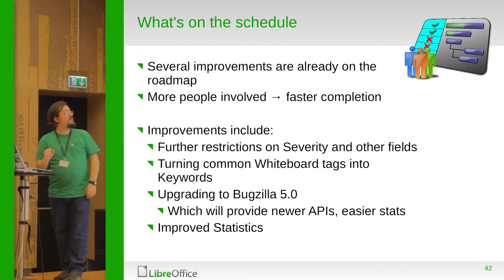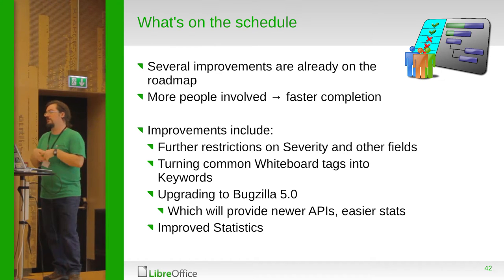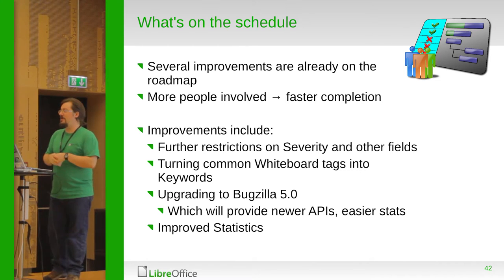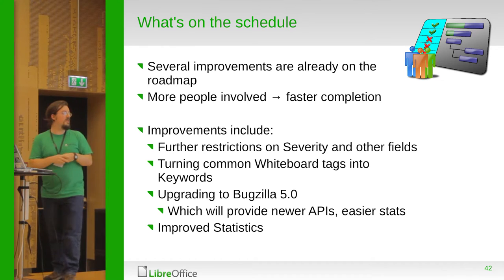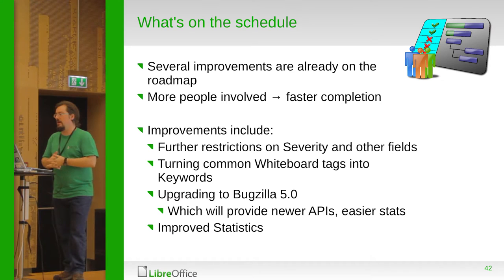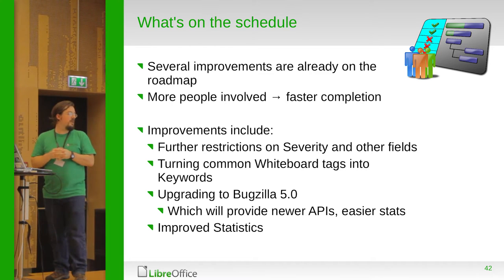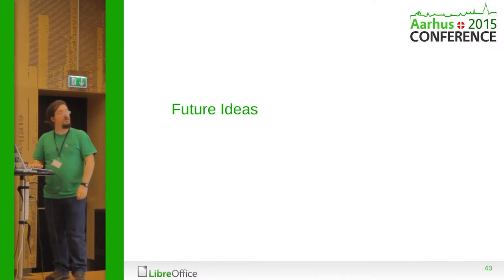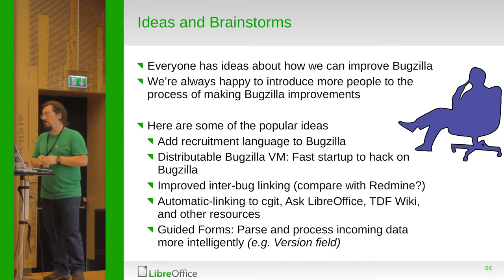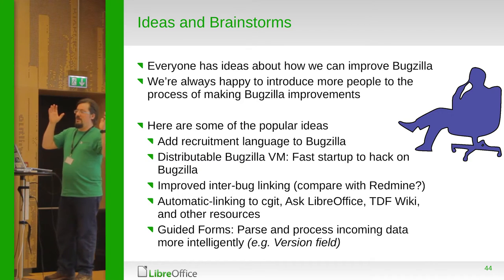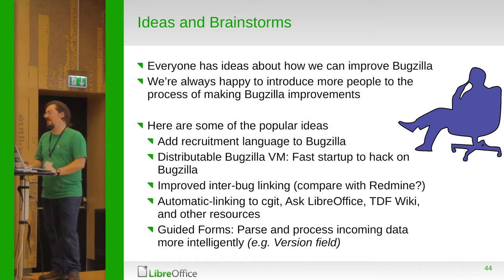Our current plans are to make some small changes — further restrictions to fields like who is assigned and QA contact, so ordinary users don't inadvertently modify bugs in ways they shouldn't. We're also going to upgrade to Bugzilla 5.0, which will give us more APIs, some easier statistics, and a better user interface. Unfortunately it won't give us some of the great attachment features I mentioned. But one more person joining the team can make a big difference.